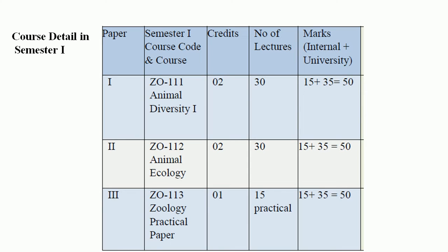In the syllabus pattern of 2019, the course design in zoology has three courses allotted for Semester 1. ZO-1-1-1, Animal Diversity course, is allotted 2+0.3 lectures. Similarly, the second course, ZO-1-1-2, Animal Ecology, has the same 2+0.3 lectures. And the third course is a practical course, ZO-1-1-3, allotted 1+0.3 lectures.